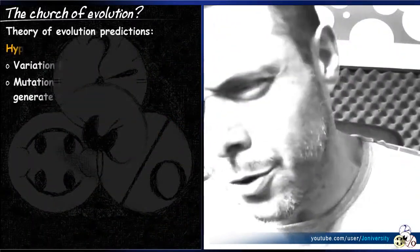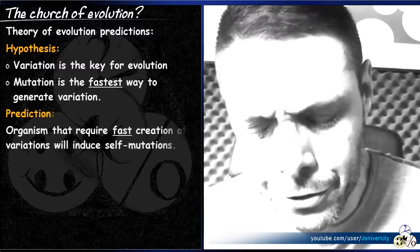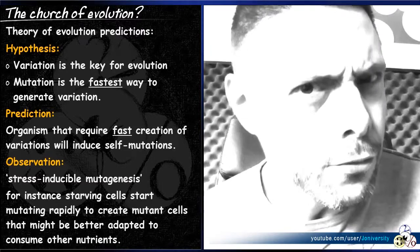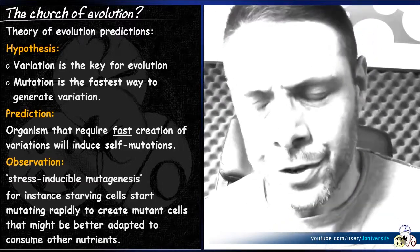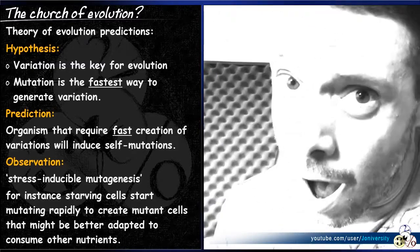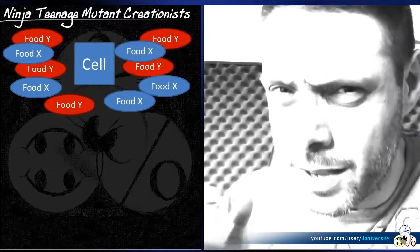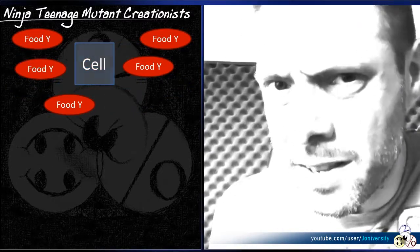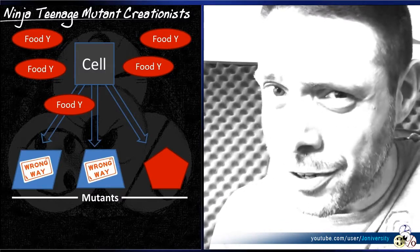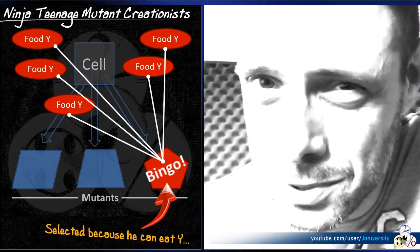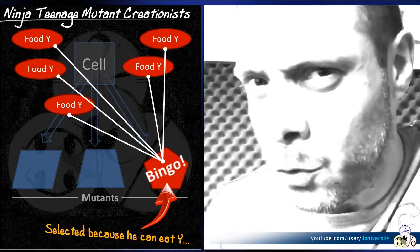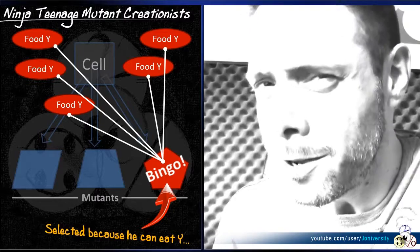Now, in nature, when organisms require variation in order to survive changes in the environment, like food shortage, they don't wait for farmers and their radiation. They actually self-induce rapid, directed mutations. Why? Well, during stress periods like starvation, the more mutated progenies, the more variation — and the more variation, the more natural selection has to choose from. And along with other mechanisms, self-induced rapid mutation actually dispels another myth: that organisms slowly evolved into everything we see today.